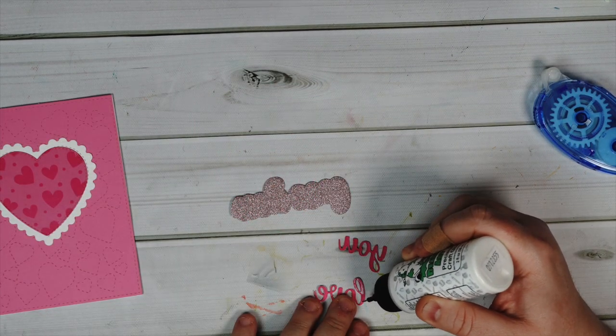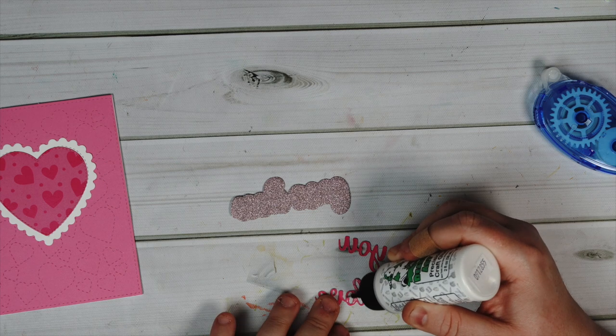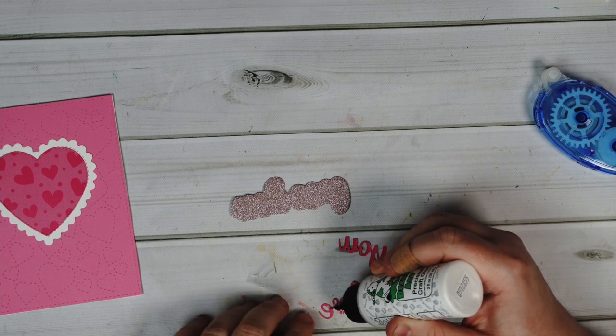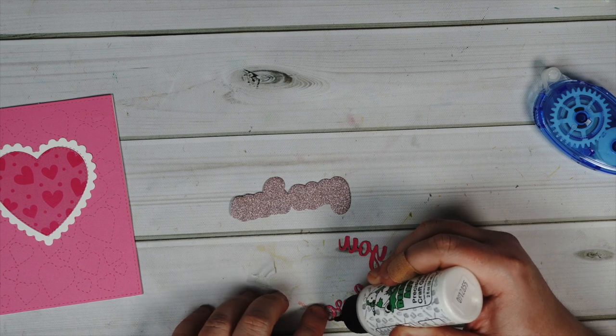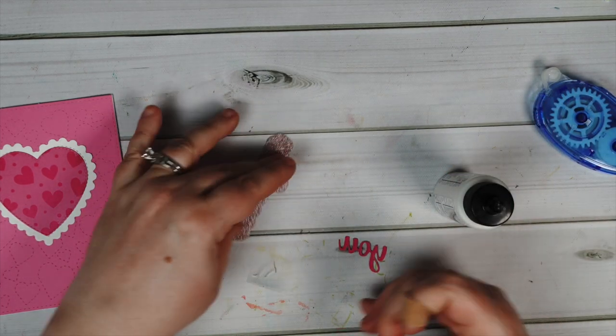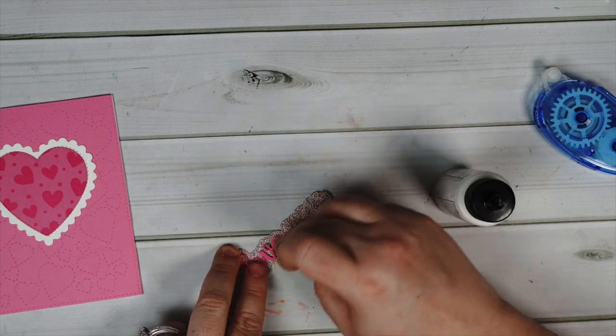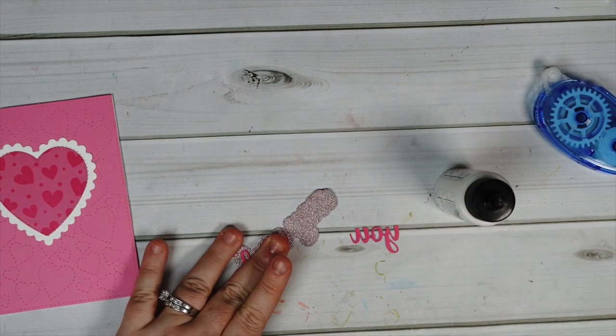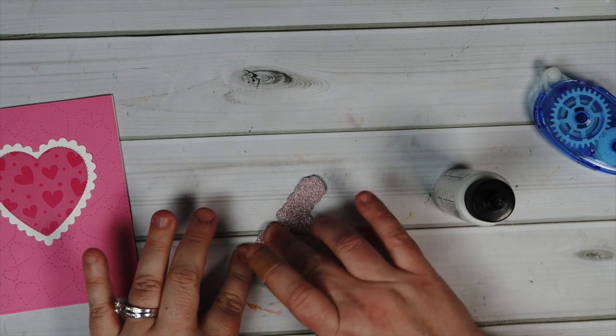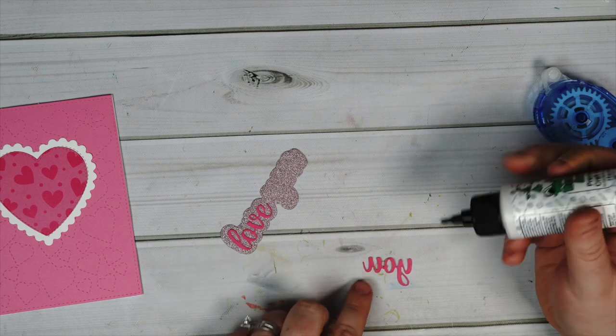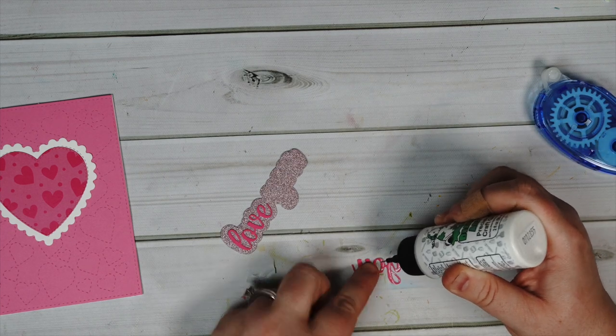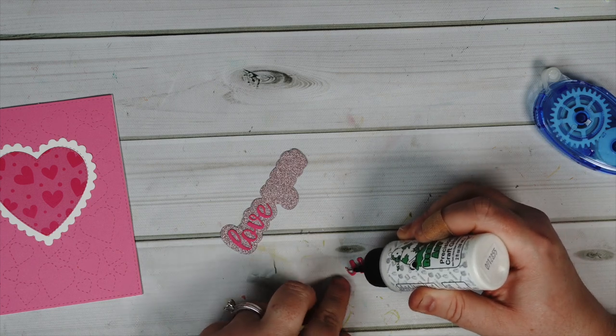To glue on the letters for the love you I'm just using some liquid adhesive. I thought it was easier to get in those little lines. You could also use some double stick adhesive while you're die cutting to make it like a sticker, which I do often, but this time I'm just using liquid glue. You just have to hold it down for a few seconds just to make sure when it starts to dry it's not popping up anywhere, but it's really easy and it does dry quickly.